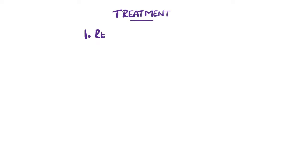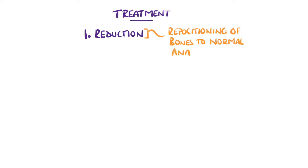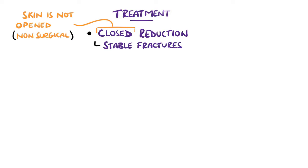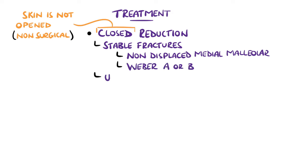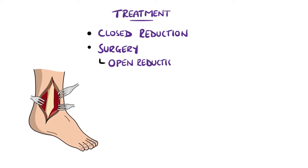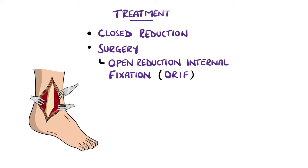Treatment involves prompt reduction of the fracture, which means repositioning the bones to their anatomical positions. This can be done conservatively or with surgery. Indications for conservative treatment or closed reduction are stable fractures — for example, non-displaced fractures of the medial malleolus, Weber A or Weber B fractures — people who are deemed not fit for surgery, and cases where the soft tissues are too significantly impaired. An open reduction involves opening the skin to reduce the fracture, which will also include internal fixation, meaning internally setting and stabilising the fractured bones. This is commonly referred to as ORIF.